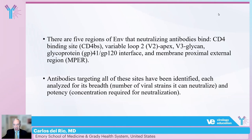There are essentially five regions in the envelope protein that can be bound by neutralizing antibodies: the CD4 binding site, the variable loop or V2 apex, the V3 glycan site, the glycoprotein GP41-GP120 interface, and the membrane proximal external region. Antibodies targeting all of these sites have been identified, and each has been analyzed for its breadth — the number of viral strains it can neutralize — and its potency, meaning the concentration required for neutralization.